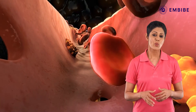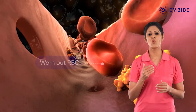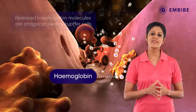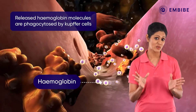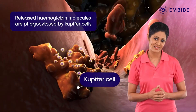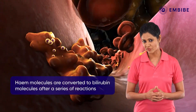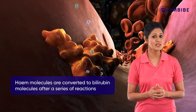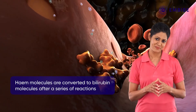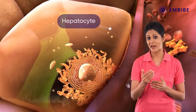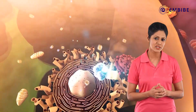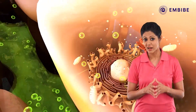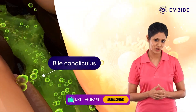Within the sinusoid, as worn-out RBCs disintegrate, hemoglobin is released. These hemoglobin molecules are phagocytosed by the Kupffer cells. After a series of reactions, the heme molecules formed from hemoglobin get converted into bilirubin molecules. These bilirubin molecules enter the hepatocytes, where they are converted to conjugated bilirubin, and are released along with bile into the bile canaliculi.